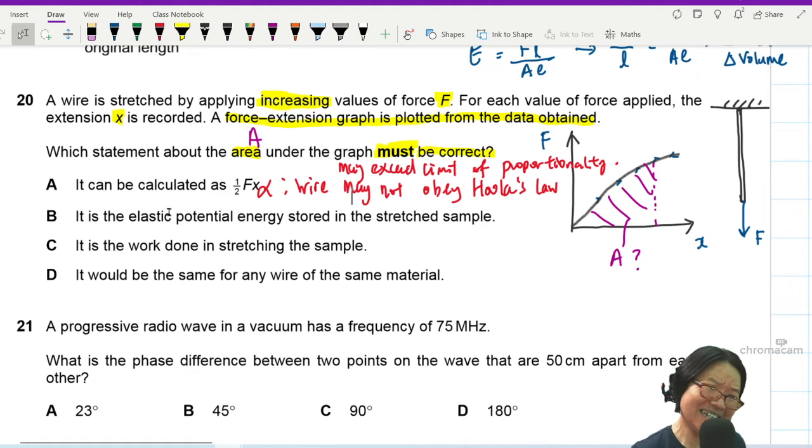Next, it is the elastic potential energy stored in the stretched sample, which is very similar to C. It is the work done in stretching the sample. And D, it will be the same for any wire of the same material. I know D is definitely not.